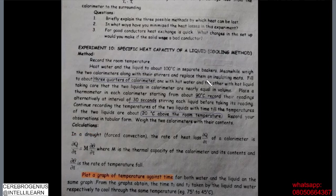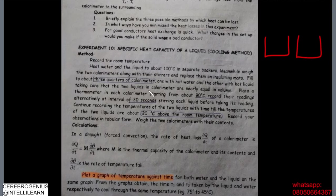Another thing to notice is that they made sure they have the same amount of liquid in both calorimeters. They use two separate calorimeters and ensure the contents are exactly the same — the same amount of water in the first calorimeter as the liquid in the second. That's why it says the two liquids in the calorimeters are nearly equal in volume.